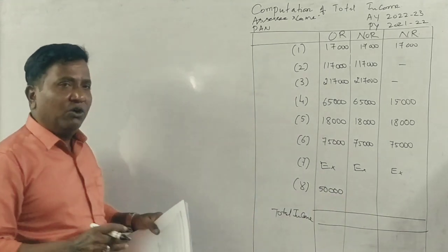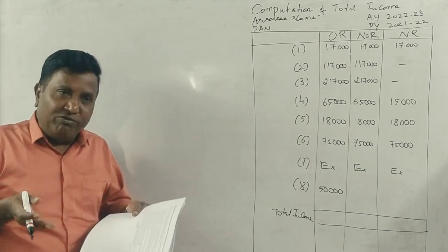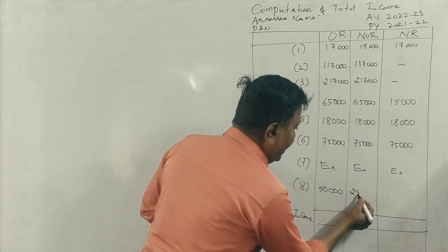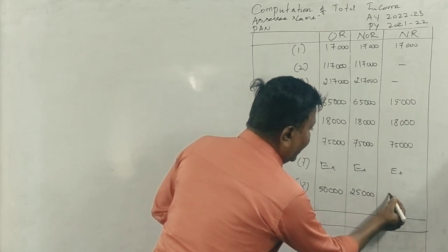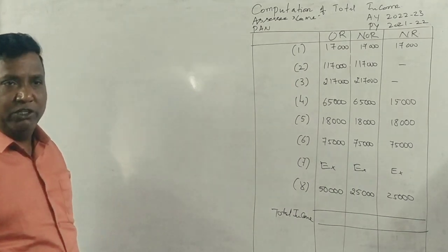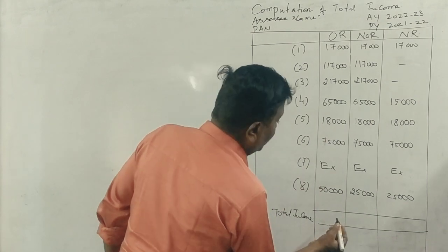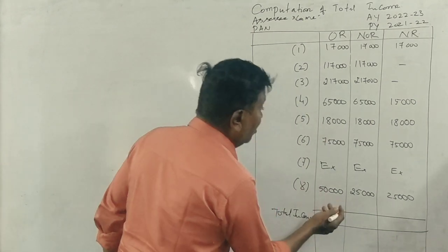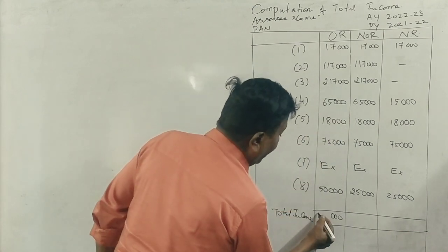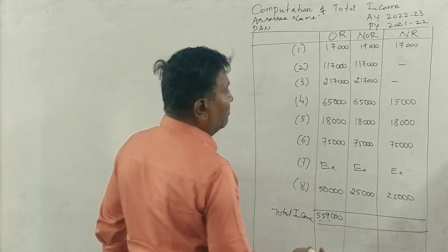If you ask the question, you can receive 50% from India. If you have 50% from India, you can receive 25,000 from India. Then you can receive all the points. This is the total income. If you ask the question, who will receive 50% from India? 55,000. If I did not receive 50% from India, you can receive 50% from India, 55,000.